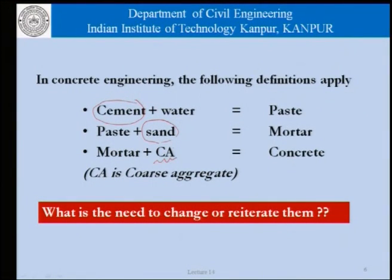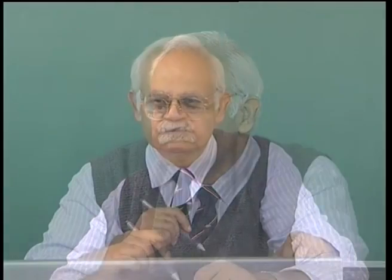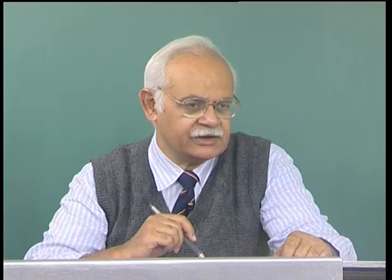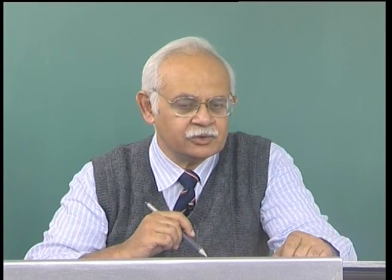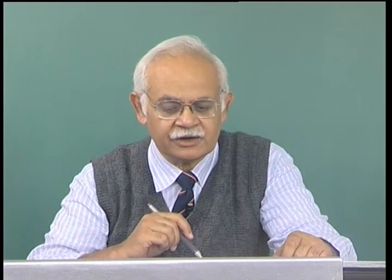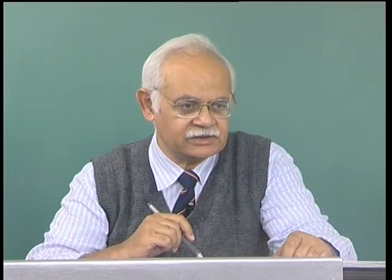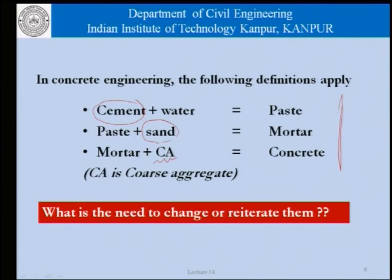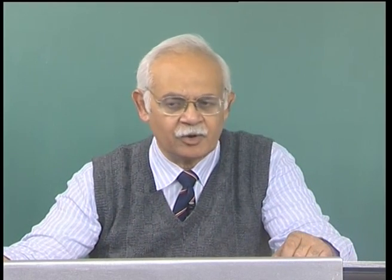A similar statement applies to coarse aggregate, because recycled aggregate can be used as coarse aggregate, helping reduce the quantity of naturally occurring rock or allowing concrete to be made with artificial coarse aggregates. These revised definitions are now under review when we are talking of special concretes — and we have talked about self-consolidating concretes and seen how mineral admixtures impact concrete properties.